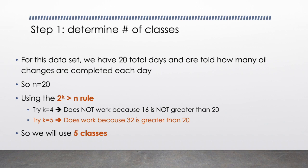So let's just start with 4. Try k equals 4. Well if k equals 4, that does not meet the rule because 2 to the fourth power is 16 and 16 is not greater than 20. So let's go up one. Let's try k equals 5. Well 2 to the fifth power is 32 and since 32 is greater than 20, it works. So we're going to use five classes to organize our data set.